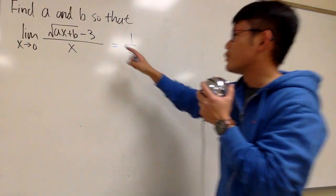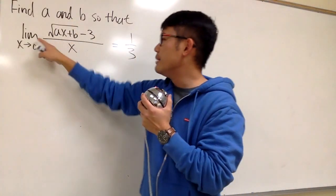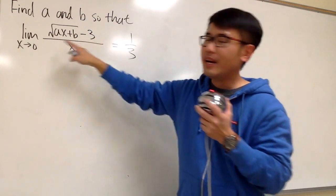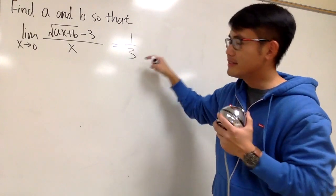Let's do some math for fun, and this is about limits. We are going to find a and b so that the limit as x is approaching 0 of square root of ax plus b, minus 3, all over x, equals 1 third.